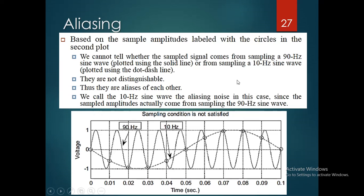We call the 10 hertz sine wave the aliasing noise in this case, since the sampling amplitudes actually come from the sampling of the 90 hertz sine wave. The sampling condition is not satisfied because one signal is 10 hertz and the other is 90 hertz, and we cannot identify what type of signal it is.